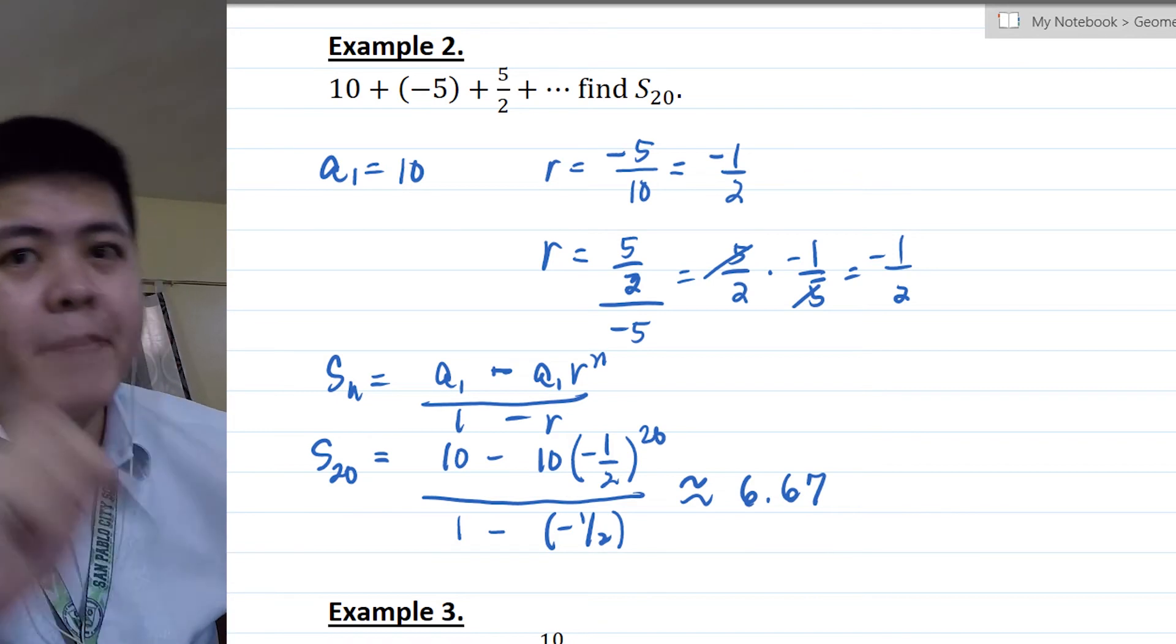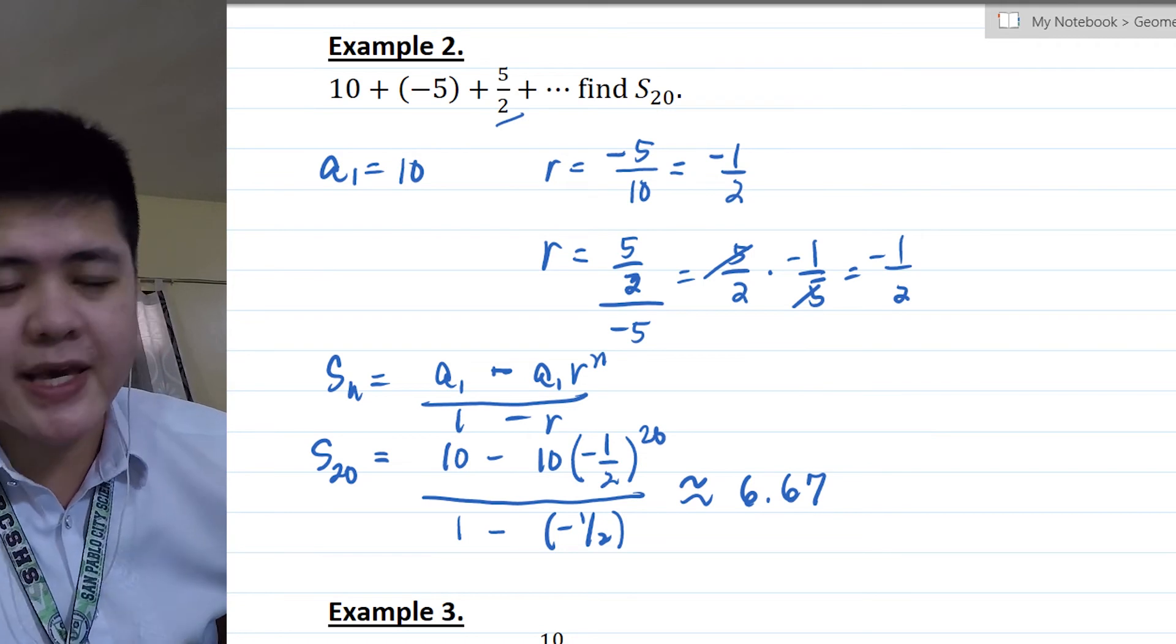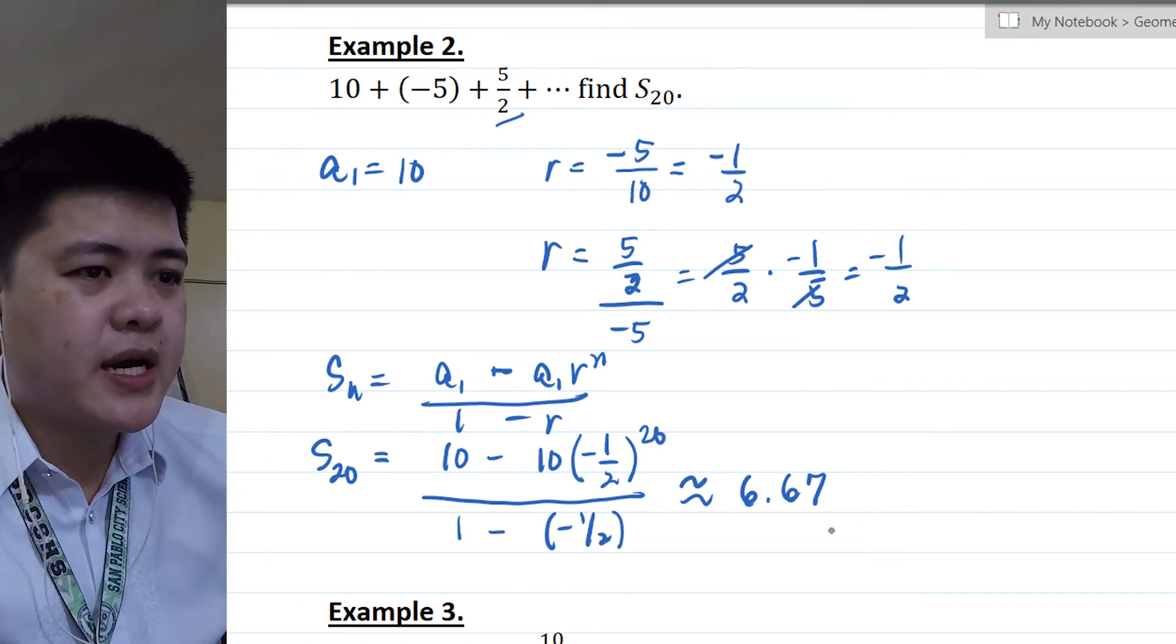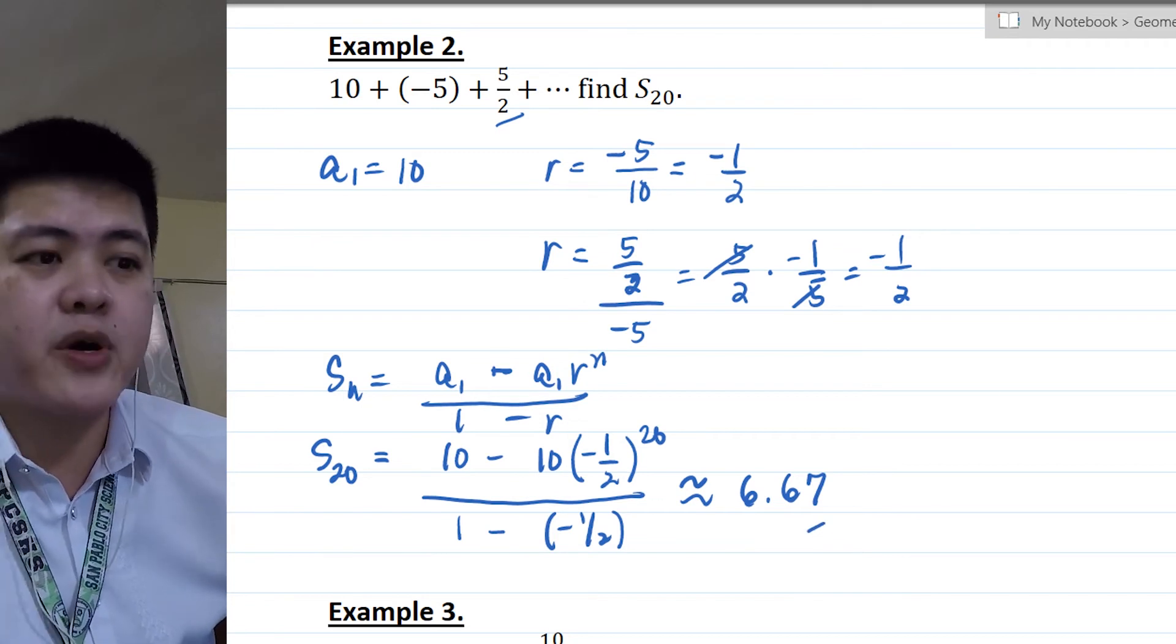So it's the value of the summation. If you notice, the value keeps changing. From 10, negative 5, 5 halves, it keeps changing. So until the 20th term, the sum is approximately 6.67.